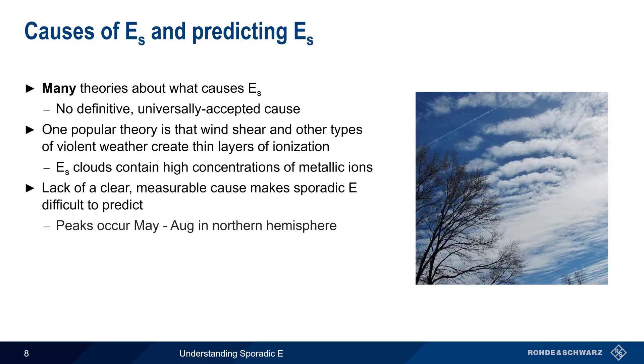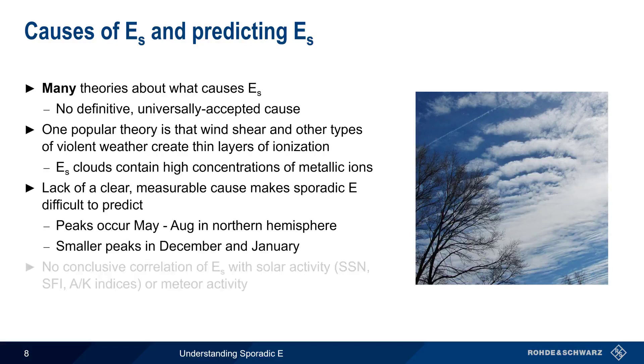It's known that peaks in sporadic E activity occur between May and August in the northern hemisphere, with some smaller peaks in December and January. And while there are studies that suggest that sporadic E may somehow be linked to meteor activity or solar activity, there is still no conclusive correlation between these and the appearance of sporadic E.